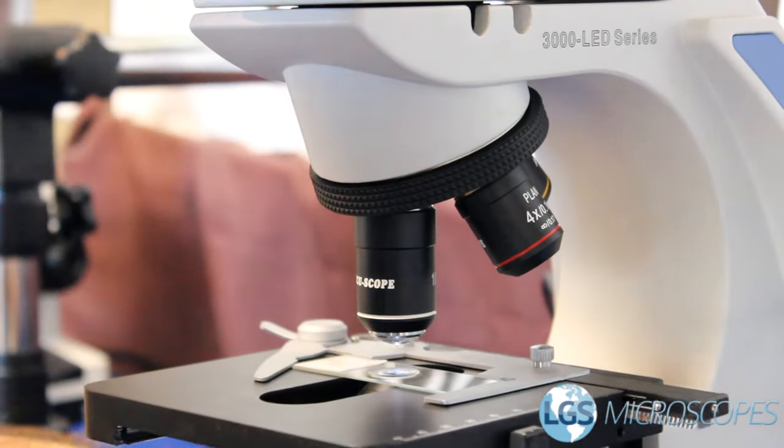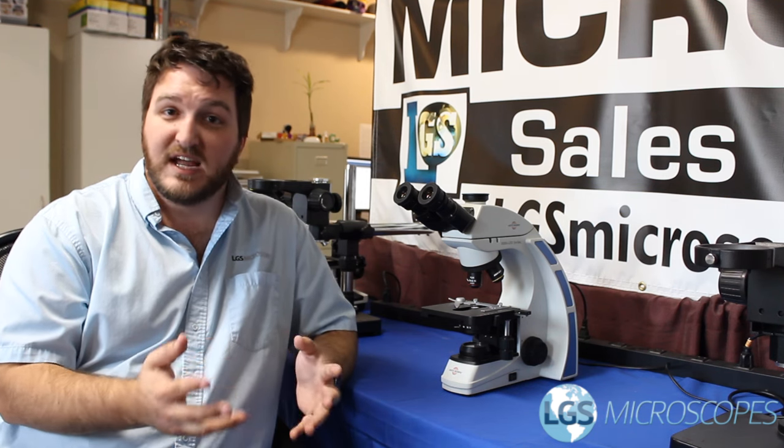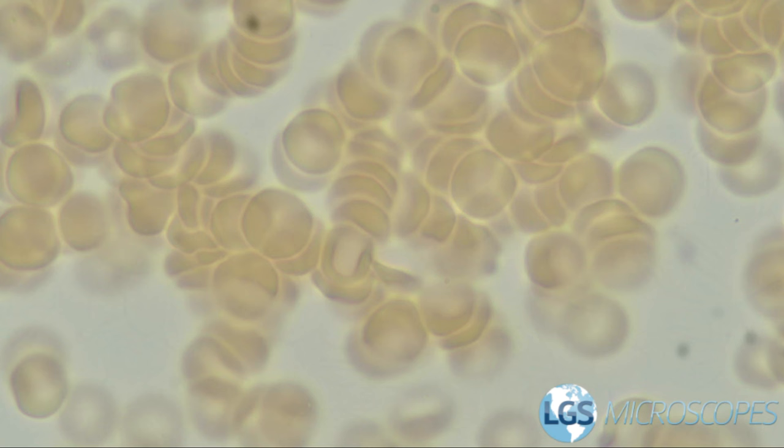The number one indicator that your objective might have oil on it or inside of it is that the image will appear hazy and kind of blurred like you can't quite get it into focus. If that happens then you should probably call a professional to take a look at it.